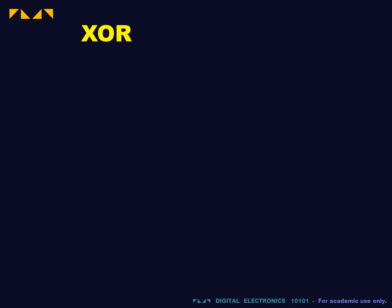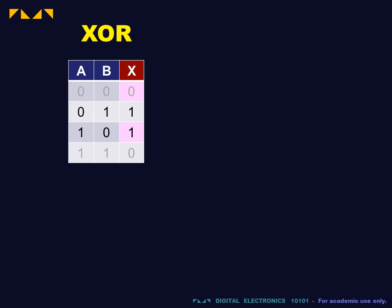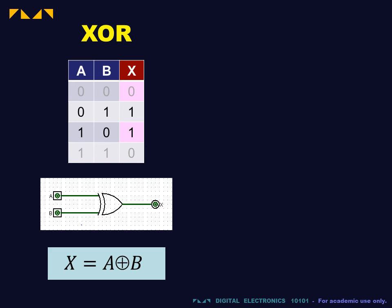Finally, the exclusive OR gate is different from the inclusive OR gate in that the output is true only if one of its two inputs is true. The Boolean expression reads x is equal to a XOR b.